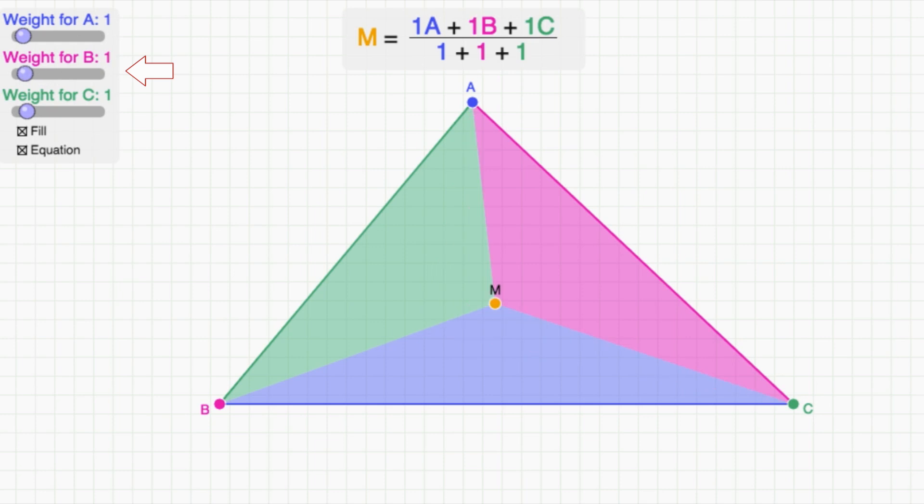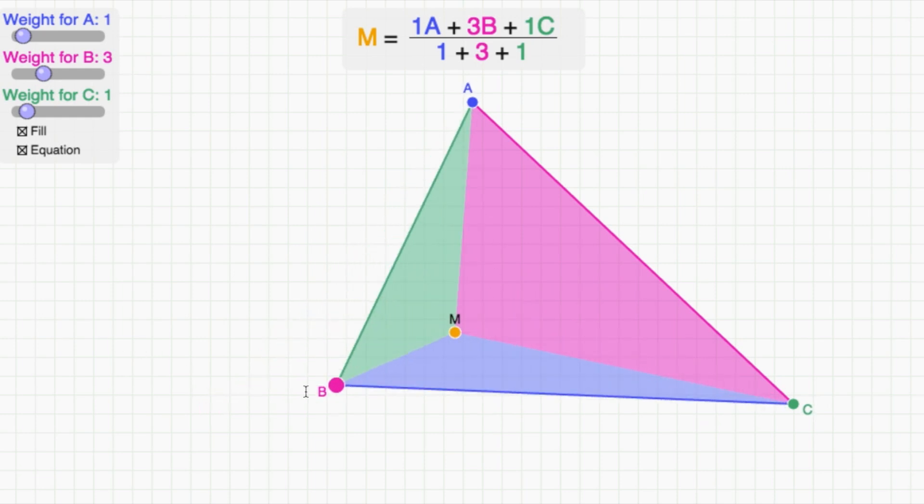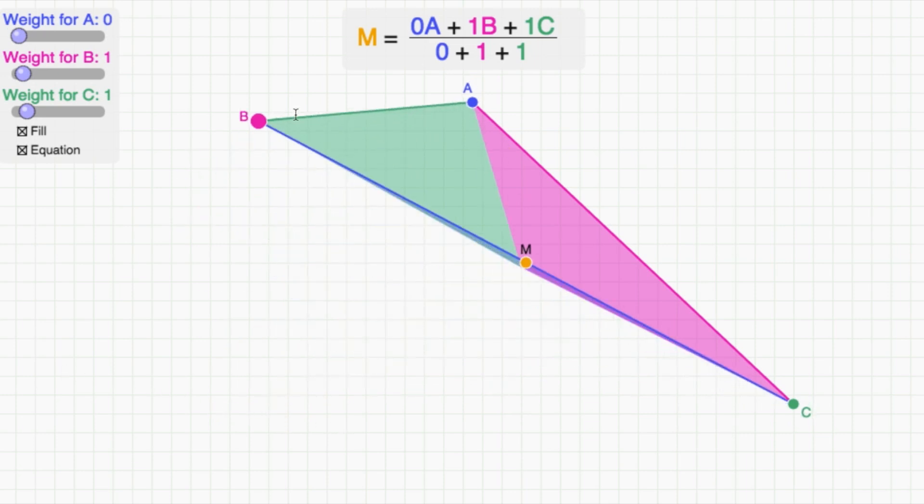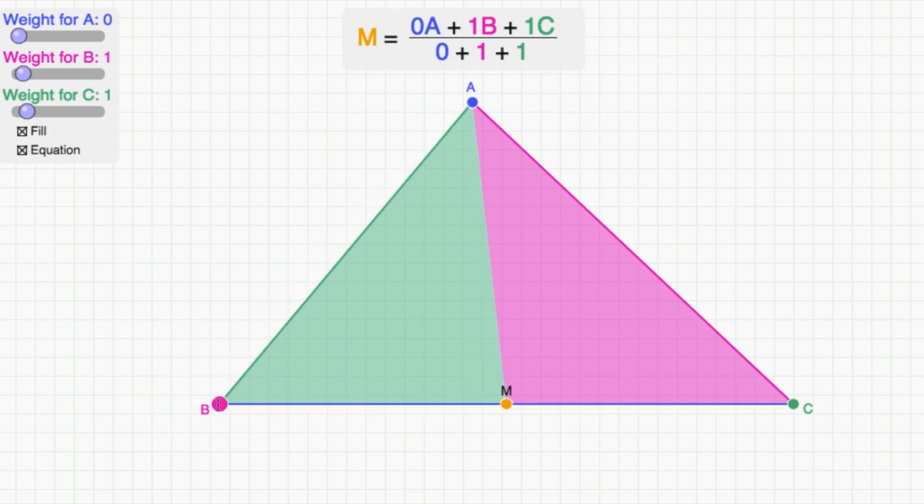Increasing b's weight to 2 moves the m closer to the b. Increasing it to 3 moves it even closer. Setting a's weight to 0 means that it doesn't matter anymore. So, m is on the line somewhere in between b and c.